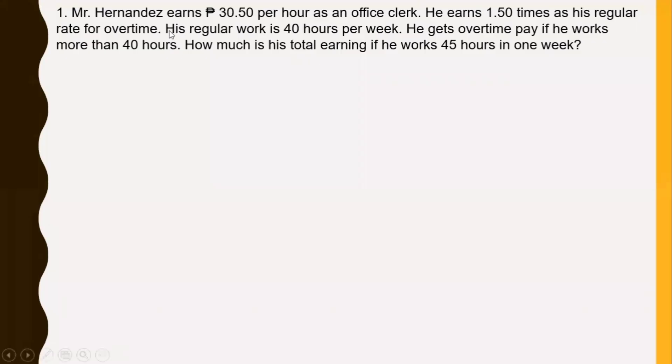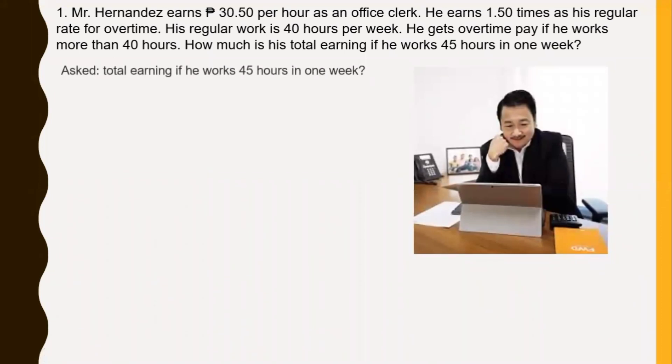Let's have an example. Mr. Hernandez earns 30 pesos and 50 centavos per hour as an office clerk. He earns 1.50 times his regular rate for overtime. His regular work is 40 hours per week. He gets overtime pay if he works more than 40 hours. How much is his total earnings if he works 45 hours in one week? So in this problem, what is asked is total earnings if he works 45 hours in one week.